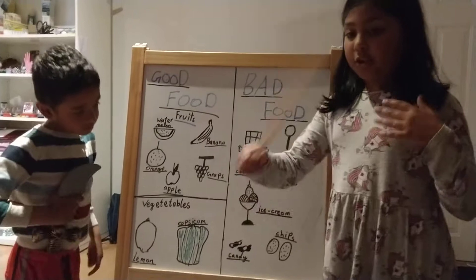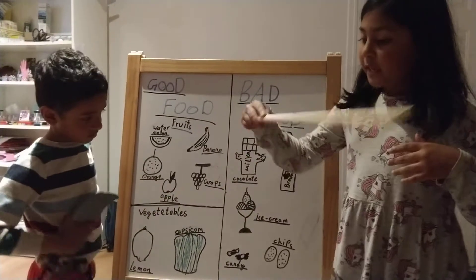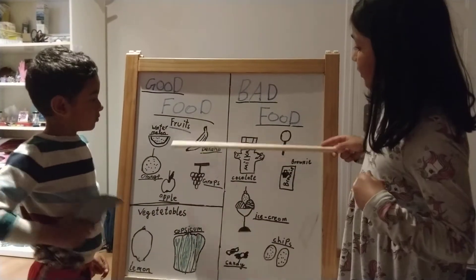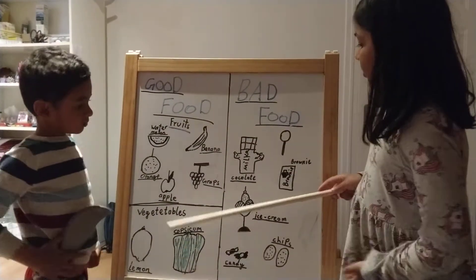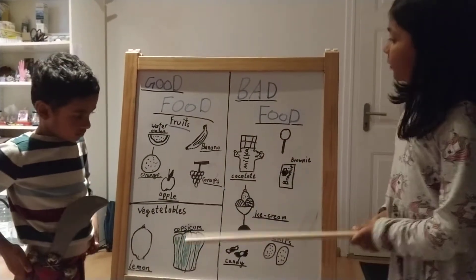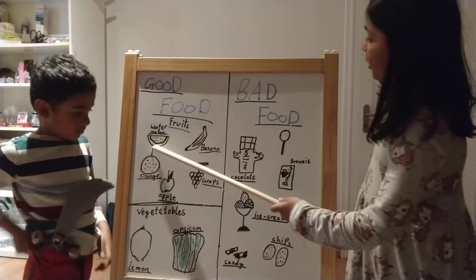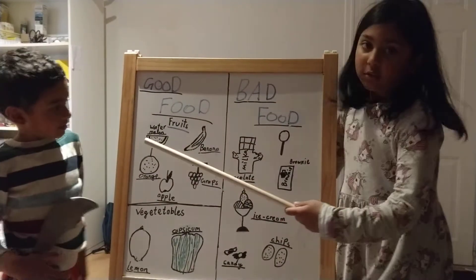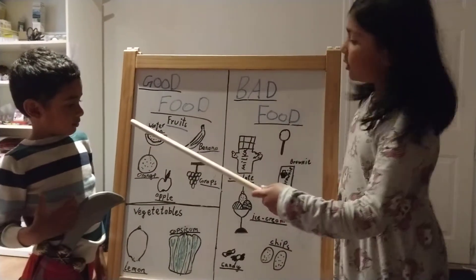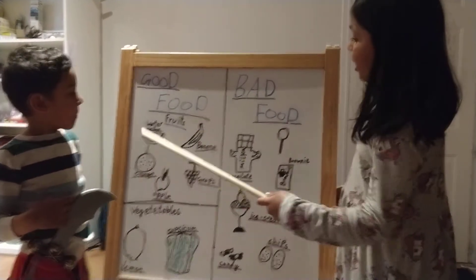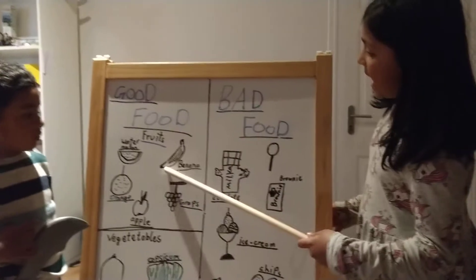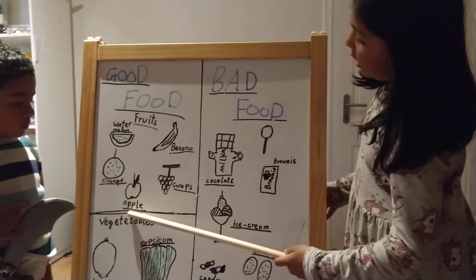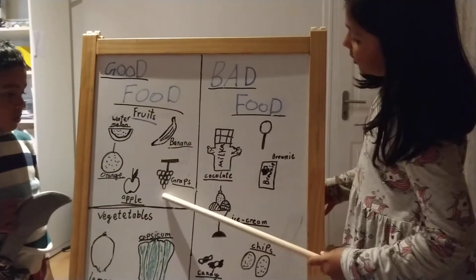I split the good food in half — the fruits and the vegetables. The fruits are watermelon, banana, orange, apple, and grape.